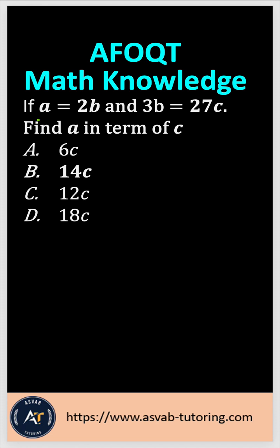The question says that if A equals 2B and 3B equals 27C, find A in terms of C. So what you have to do is you have A equals 2B, so you have to replace this B with C. Let's do that.